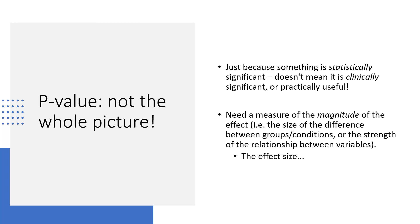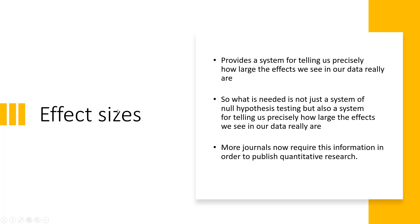The p-value is not the whole picture of our results. Just because something is statistically significant doesn't mean it is clinically significant or practically useful. Alongside a p-value, we also need to calculate and interpret an effect size — a measure of the magnitude of the effect, such as the size of the difference between groups or the strength of the relationship between variables. Effect sizes provide a system for telling us how large the effects we've observed really are, with criteria for small, moderate, or large effects.